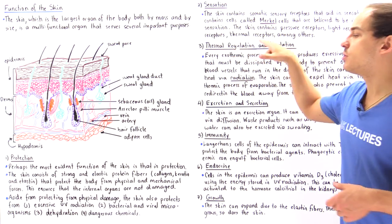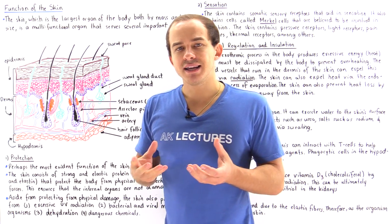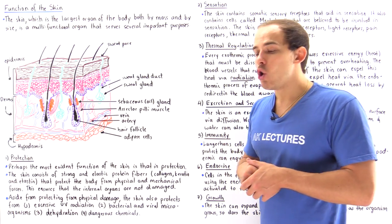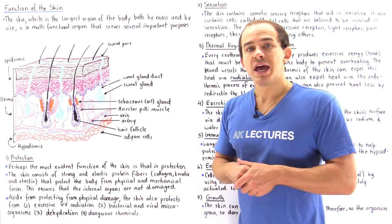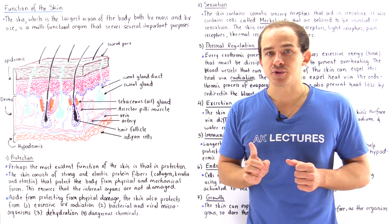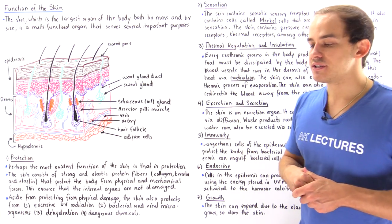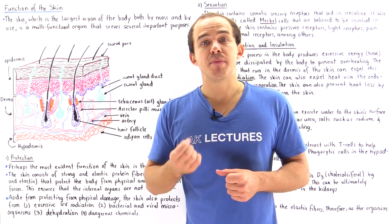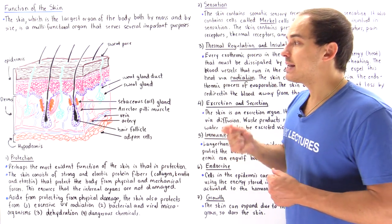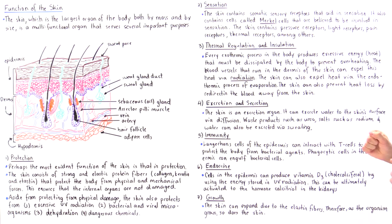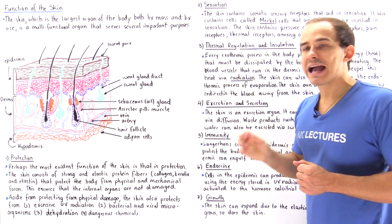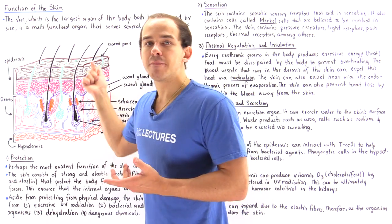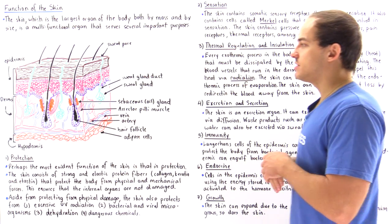Our body is in a constant state of homeostasis and needs to maintain a constant core temperature of 36.7 degrees Celsius. If our temperature increases or decreases even slightly, our proteins lose their efficiency and cannot function properly. So the body uses the skin to maintain thermal regulation via sweating, perspiration, evaporation, and radiation.